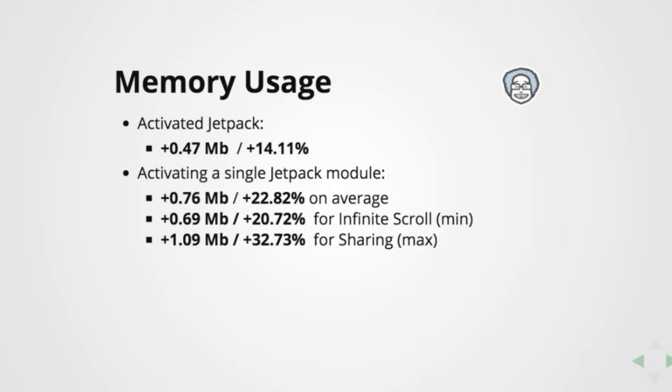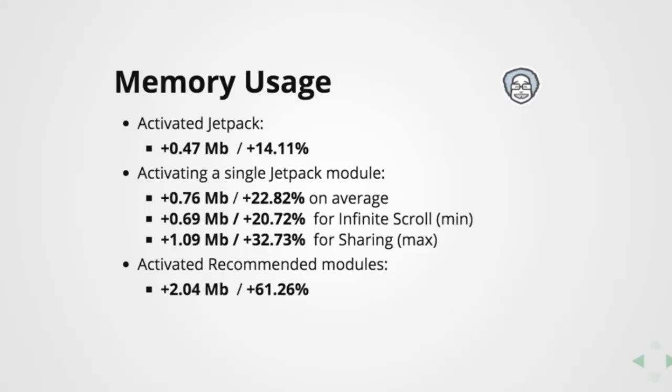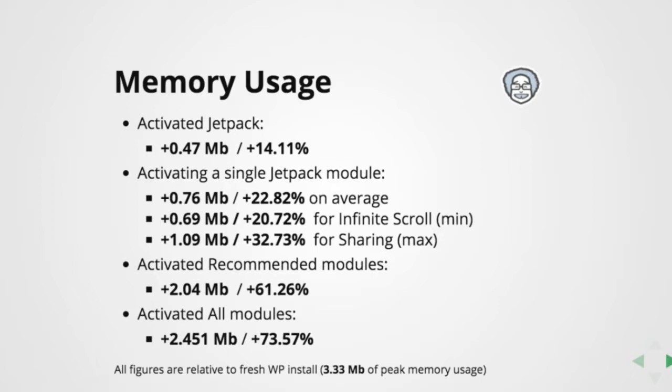On Jetpack, when you install and activate it, they offer a set of recommended modules you can turn on with one button. If you do that, that's two megabytes of additional memory — a 61% increase. If you activate everything, that's a 2.5 megabyte increase, keeping in mind that WordPress itself with no Jetpack installed uses 3.3 megabytes of RAM. In the numbers it looks quite bad, but WordPress websites don't exist in nature with just WordPress and Jetpack — you always have other plugins, so if you factor that in, the increase is not that big a deal.